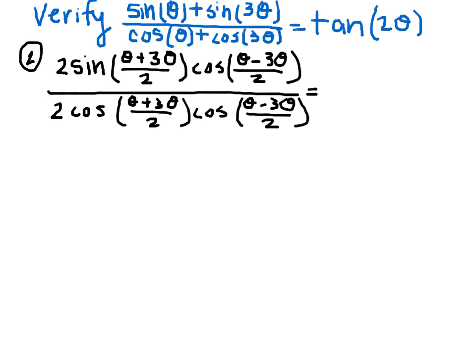And the next step is to do some simple algebra. We're going to add the theta plus 3 theta, and divide it by 2. So we still have the 2 sine. That reduces to 2 theta, that reduces to 2 theta, times cosine of negative theta.